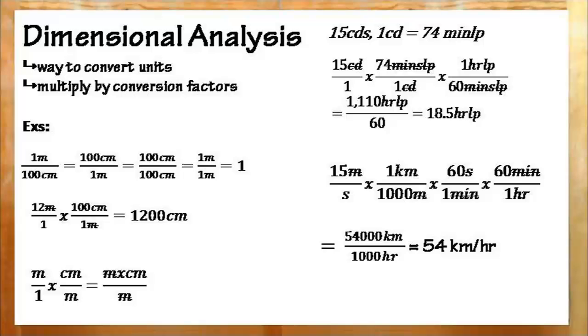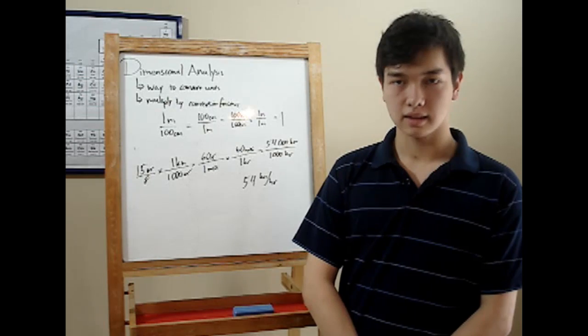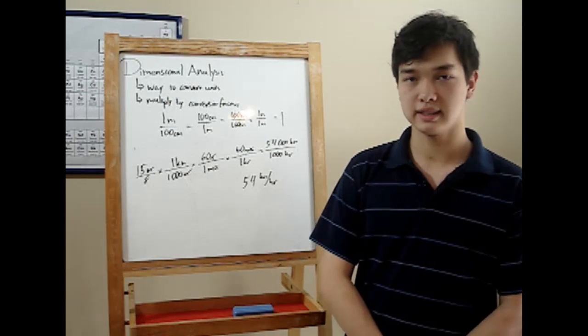To recap, dimensional analysis is a way to convert units in science. The key is to multiply by a conversion factor. That's a fraction that just equals 1. Remember to cancel out your units. Units on the bottom, to cancel them out, put the same unit on the top. Until you finally get down to the units you want. Alright, that's all for now. Again, I'm Brian Prier. See you next time.